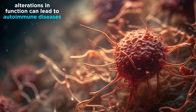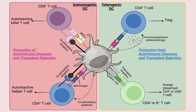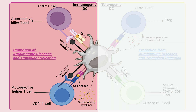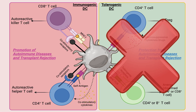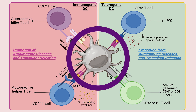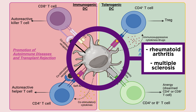Alterations in DC function originating from genetic and environmental factors may lead to the development of autoimmune diseases. In autoimmunity, DCs act as a double-edged sword: on one hand they mount adaptive self-reactive responses, but on the other hand they promote and maintain immune tolerance. Disruption of the tolerance network that relies on multiple DC subsets can promote autoreactive T cell responses and pathology. Therefore, therapies targeting DCs are being extensively studied as they may provide effective treatment for autoimmune diseases such as rheumatoid arthritis and multiple sclerosis.